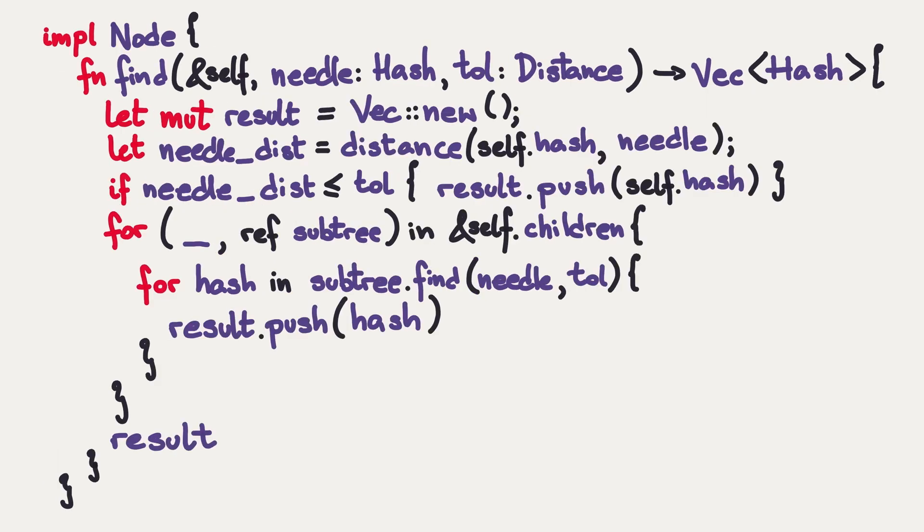This is, I think, most code I have to show for tonight, so no worries. It won't get worse than that. We've got a reference to self and a needle in a tolerance. We start with an accumulator. And we calculate the distance between the current hash and the needle I am looking for. If the current hash is within the acceptable tolerance, then I add the current hash to the result. And then I recur into all the children I have. Doing exactly the same thing. For every single child, for every single hash we can find in the child, add the child to the accumulator.